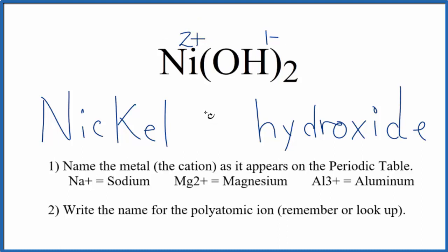So to show that in the name we put a Roman numeral two in parentheses and the name for Ni(OH)₂ is nickel two hydroxide. The two plus, that shows up right here in the Roman numeral two.